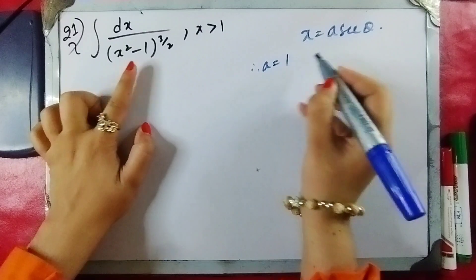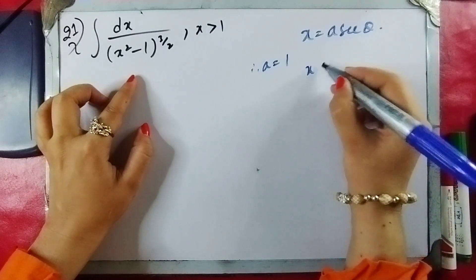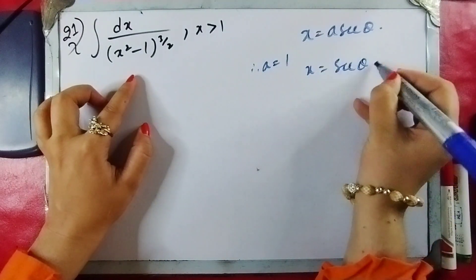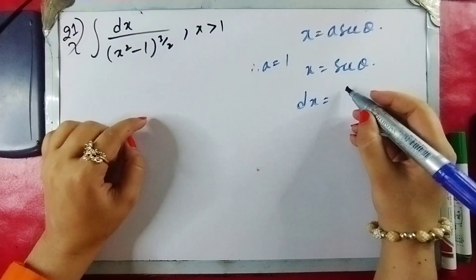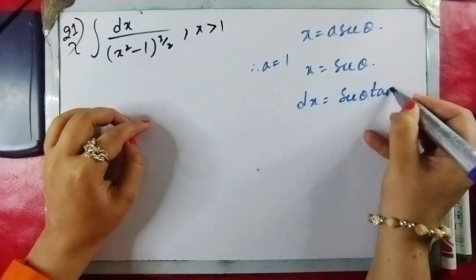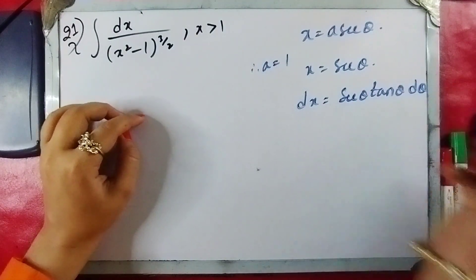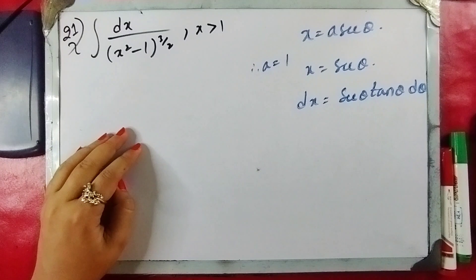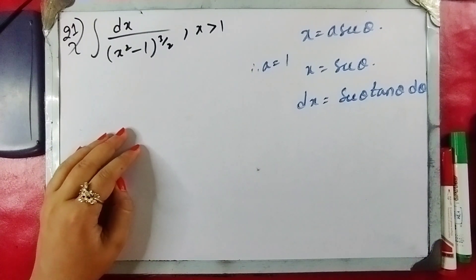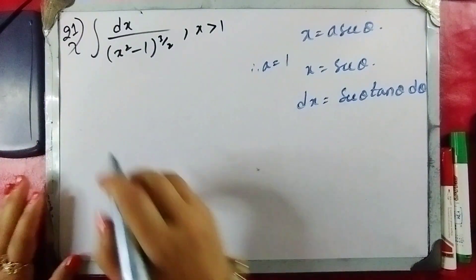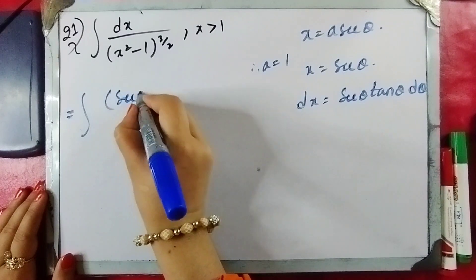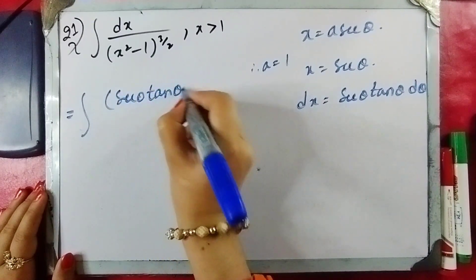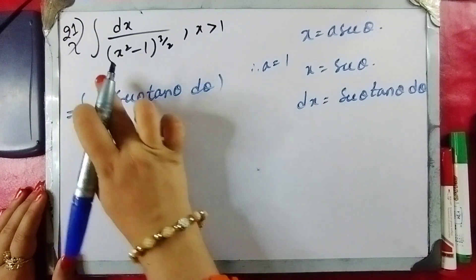Since we have x equals secant of theta, we need dx, which gives us dx equals a·secant of theta·tan of theta d-theta. Now with x and dx defined, and looking at the limits — this is an indefinite integral — there are no limits.